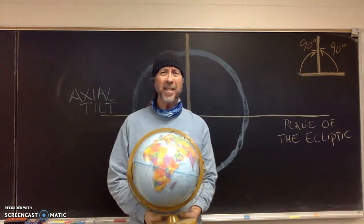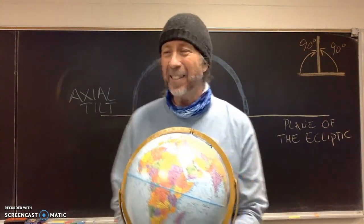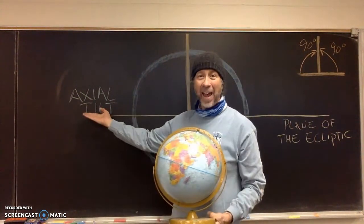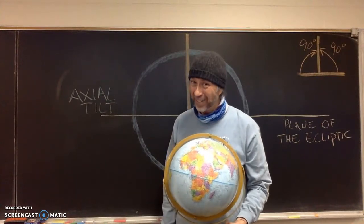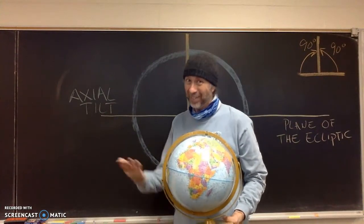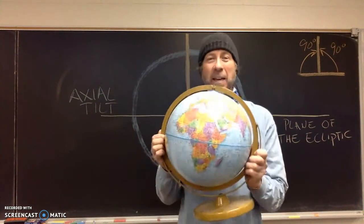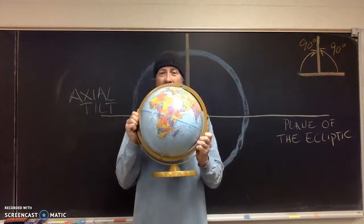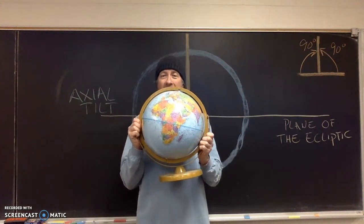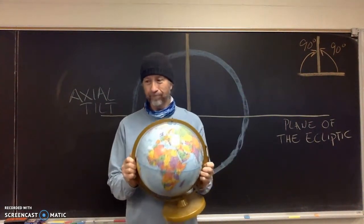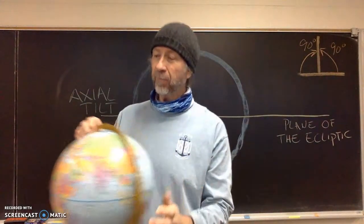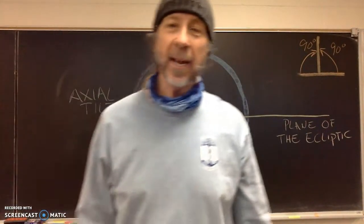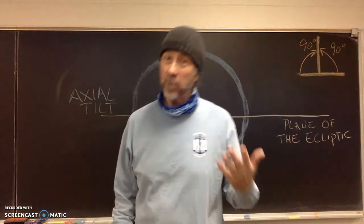It's because indeed the earth's axis is tilted. We call this the earth's axial tilt. So the axial tilt describes the fact that the earth's axis is indeed tilted. But if the axis is tilted, it has to be tilted from something, right?